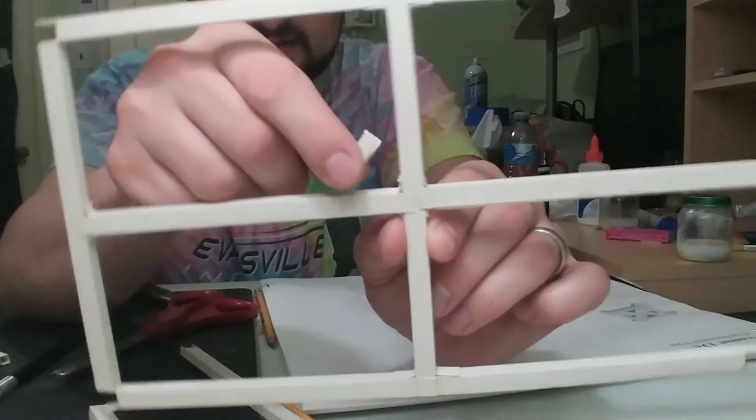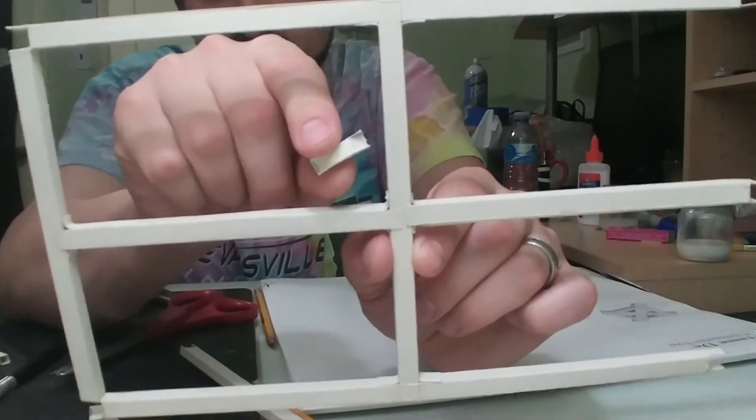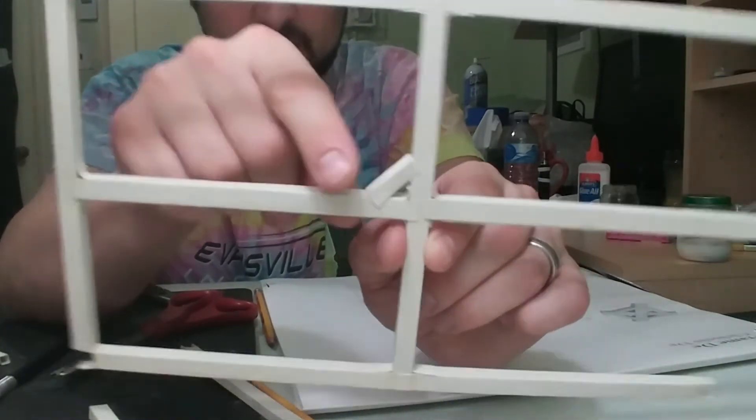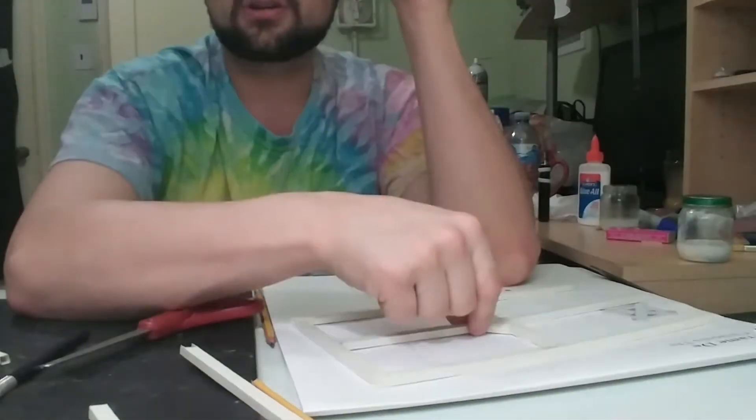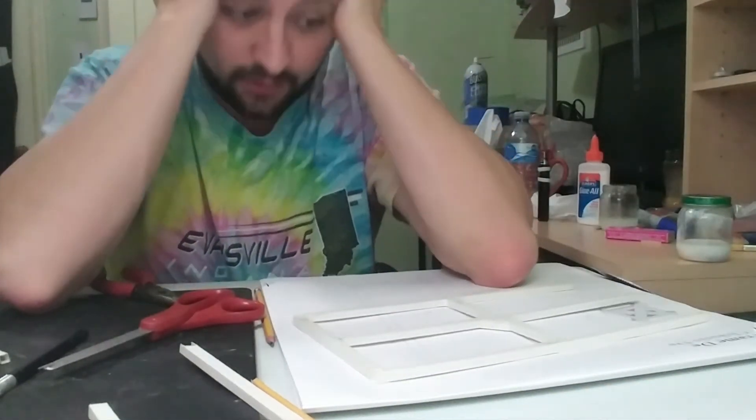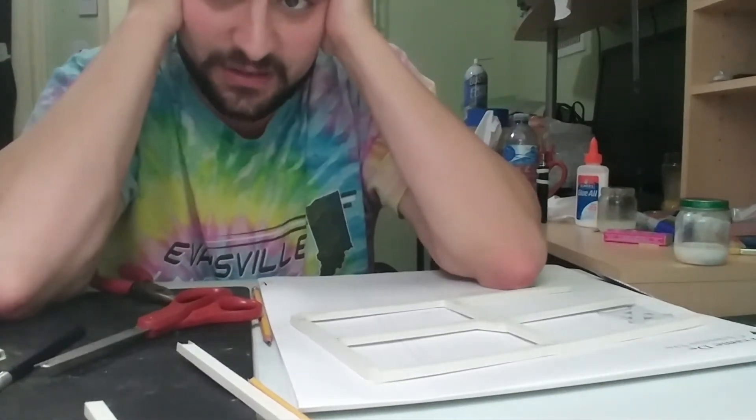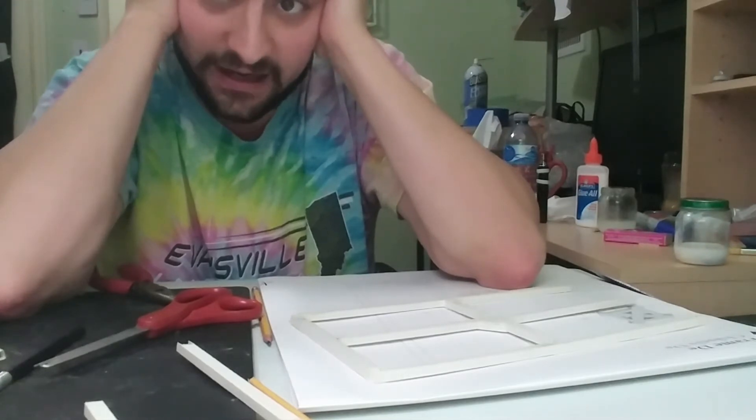So I'm going to take this off, slather glue on all the surfaces that come into contact, put it on there, set it, let it dry, make sure it's flat, and we're good to go. I'm going to do that four more times for this piece and then I'll be done with step five.